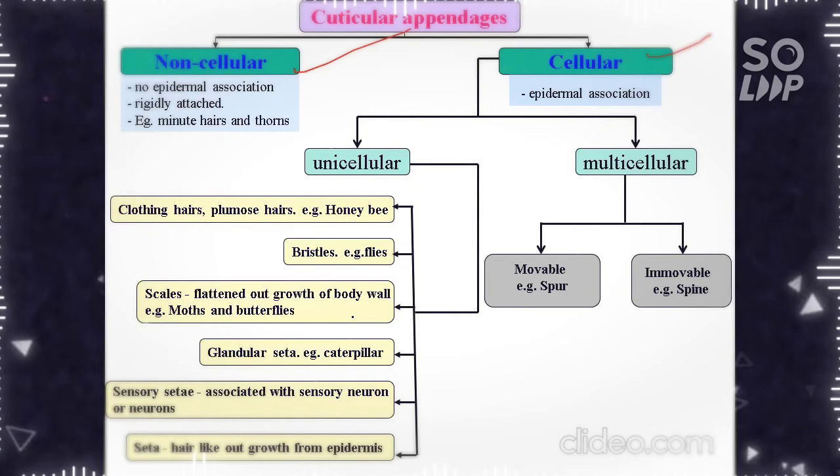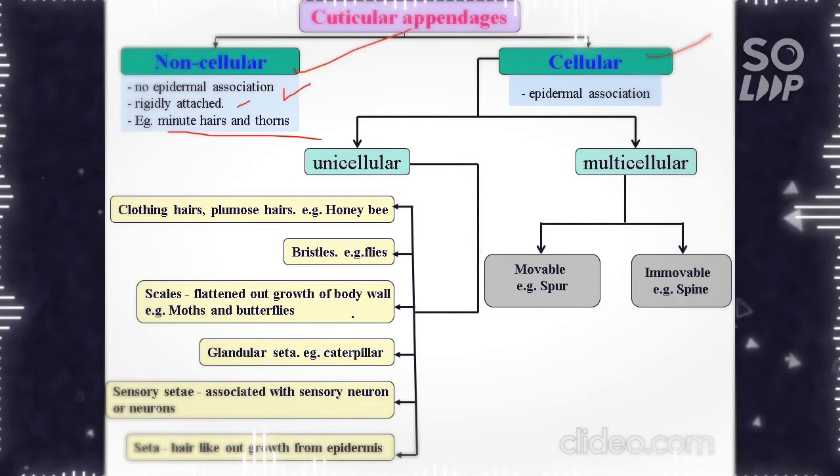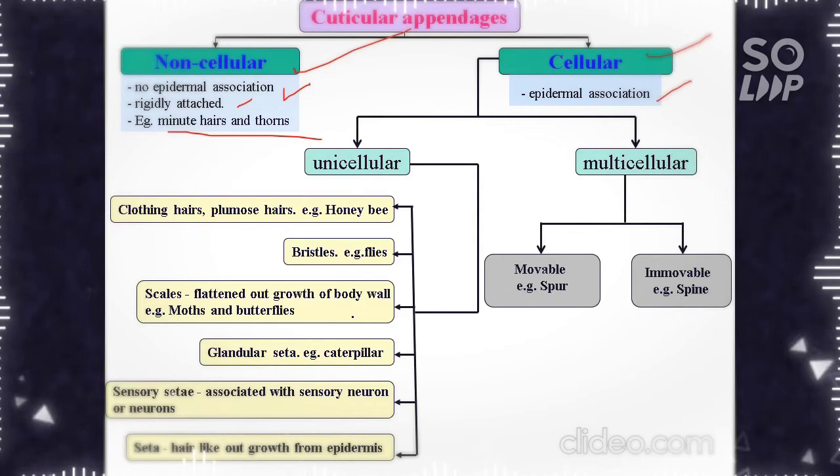Under non-cellular appendages, minute hairs and thorns have no epidermal association and are directly attached to the cuticle. Cellular appendages have epidermal association. Since the epidermal layer is cellular in origin and living, the cellular appendages are further divided into unicellular and multicellular.